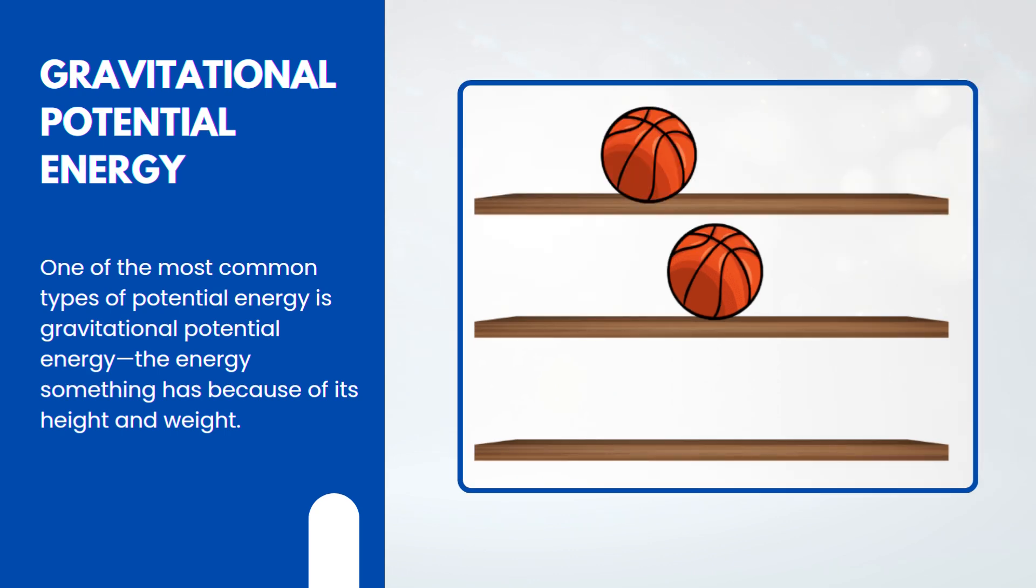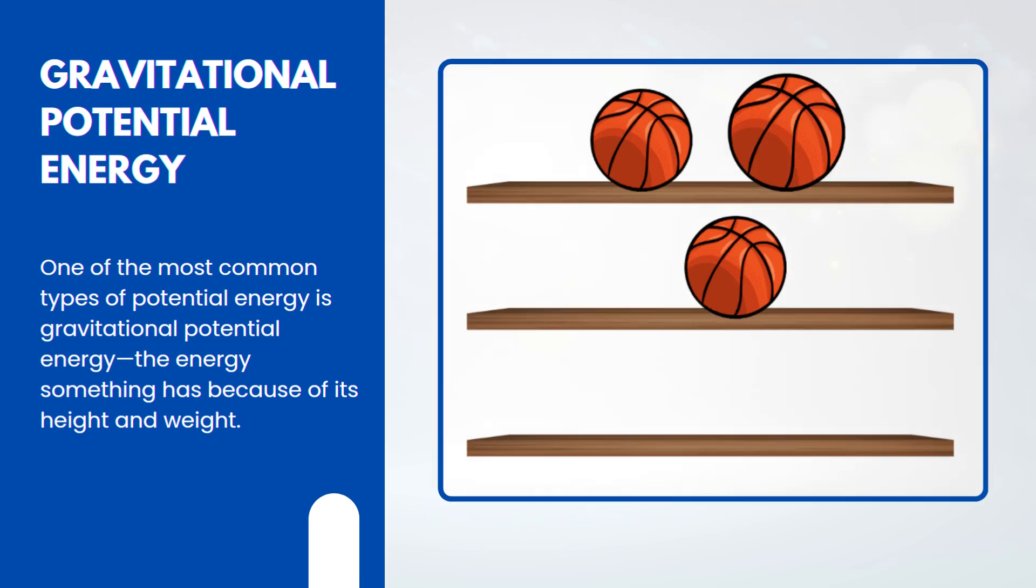Two basketballs on the same shelf have the same potential energy. But if one basketball is placed on a higher shelf, it has more. And if one is heavier, it also has more gravitational potential energy at the same height.